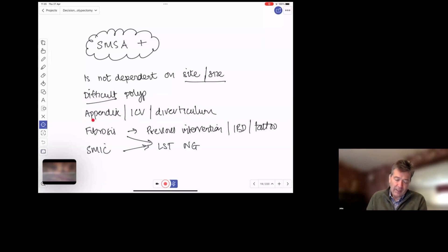As you saw this morning, the appendix orifice is one of those, an ileocecal valve, or a diverticulum, which is a bit like an appendix, would be included as an SMSA Plus lesion because of the difficulty of resecting lesions from those particular places. The other issue is fibrosis or submucosal invasive cancer.